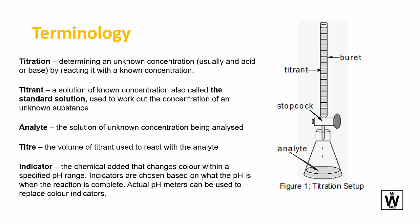You choose the right indicator that matches the reaction you're going to use. If the reaction changes pH at a certain point, you'll use that to choose an indicator that also changes colour in that range. Those are all the terms you may need if a question comes up and uses them to describe a certain chemical.